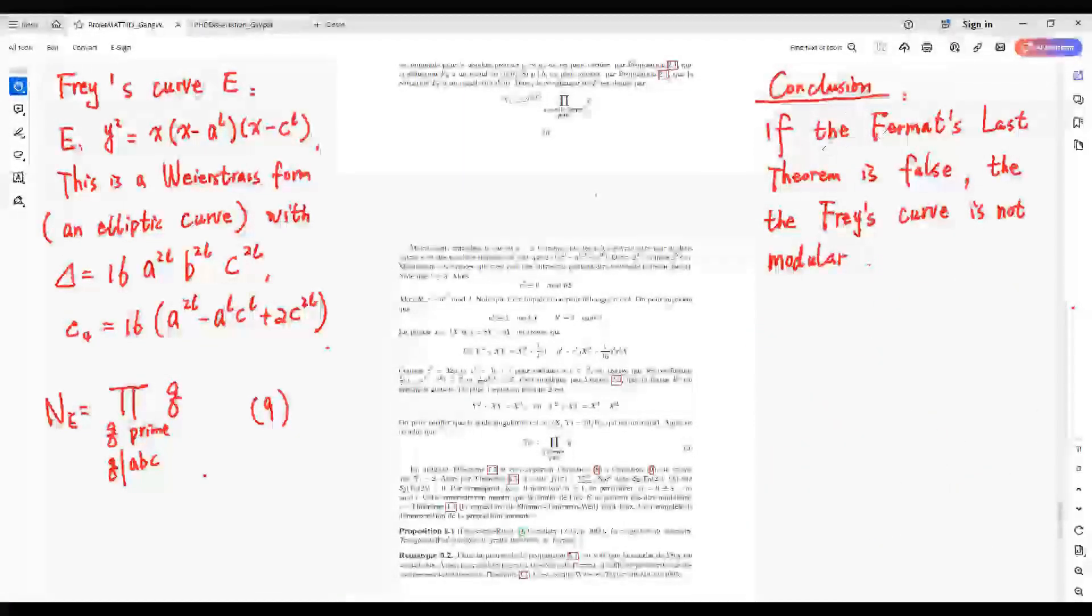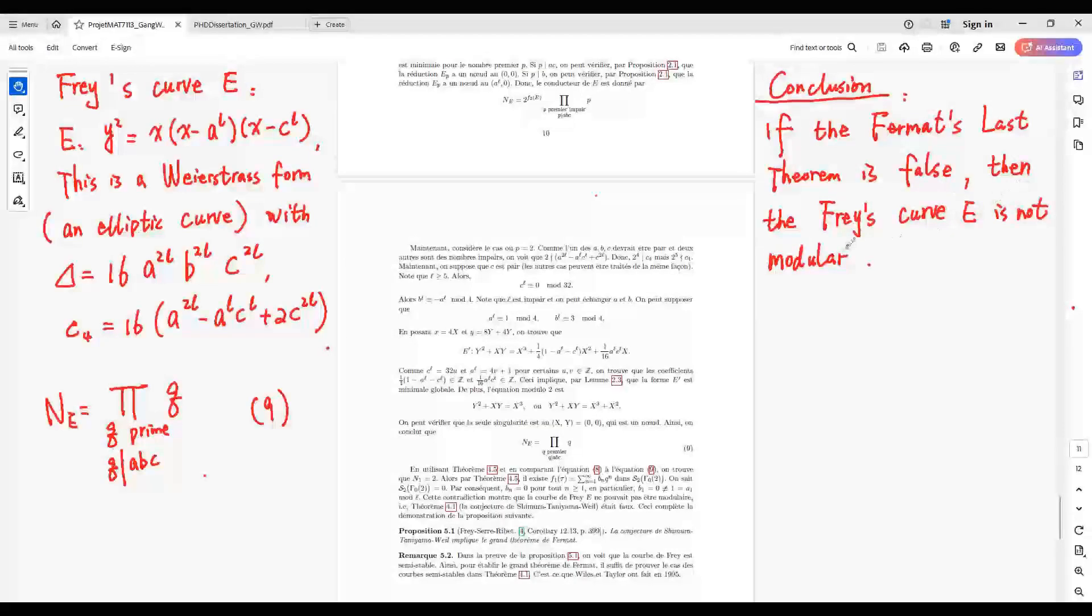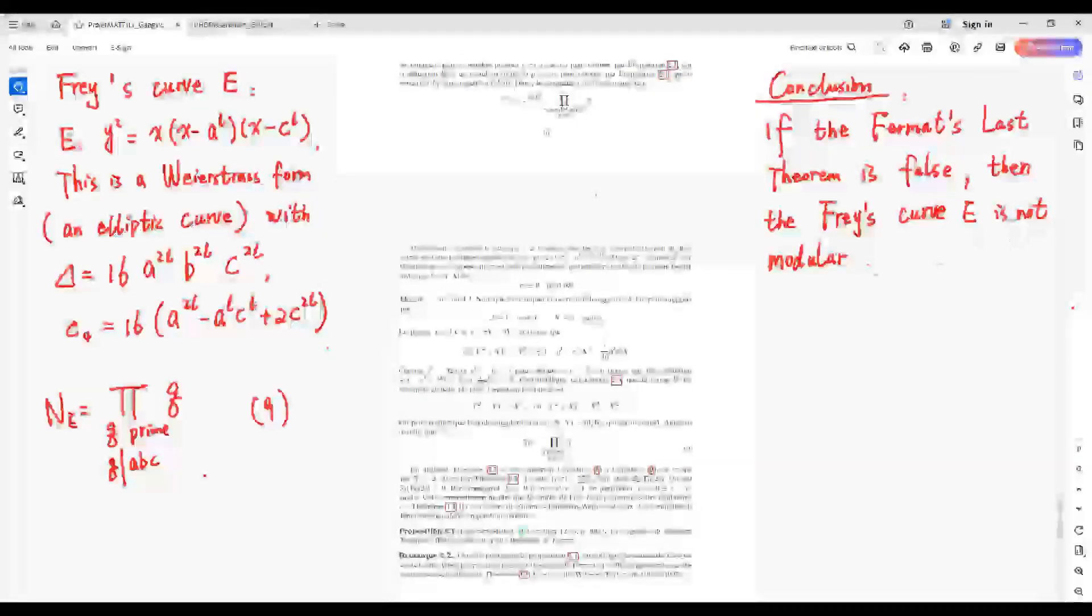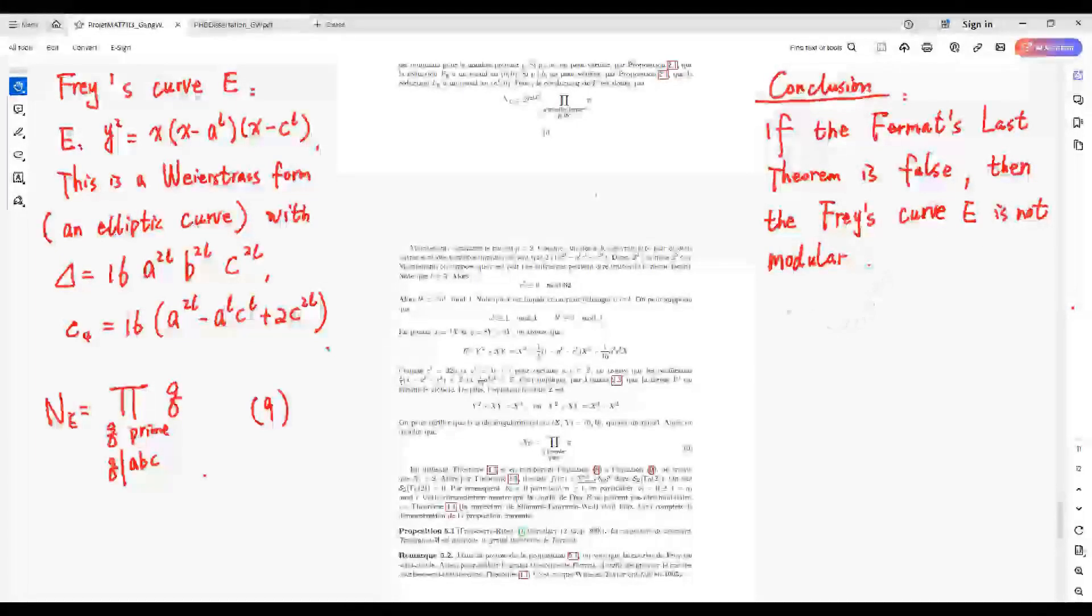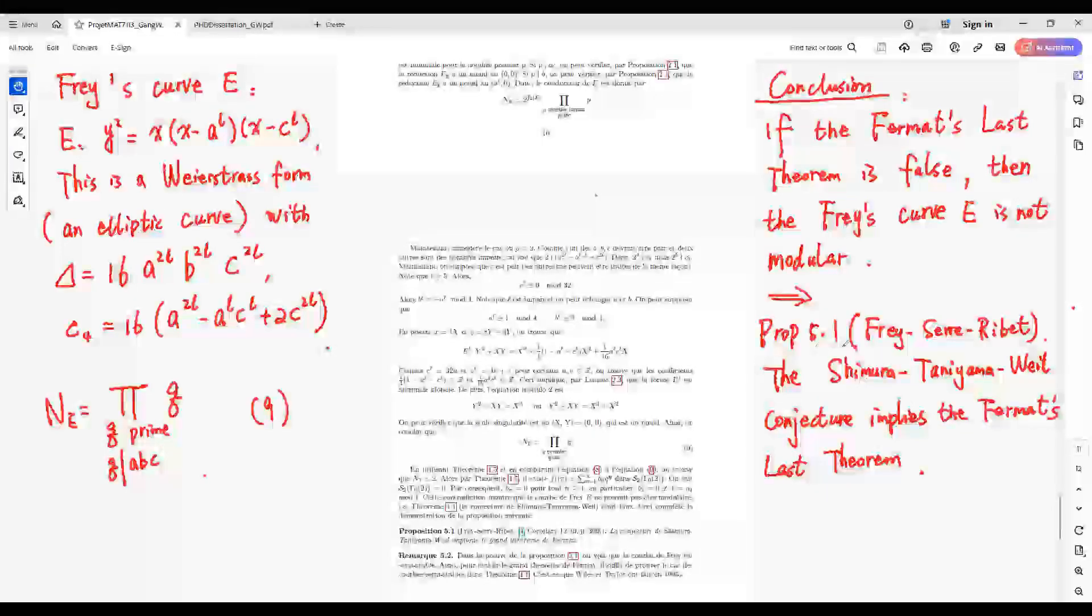Conclusion: if Fermat's Last Theorem is false, then the Frey curve E is not modular. This leads to Proposition 4.1.